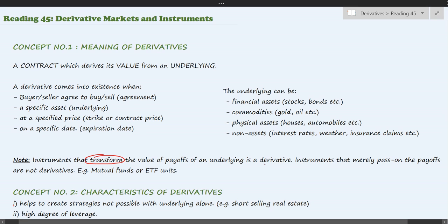We have a note here: instruments that transform the value of payoffs are derivatives — the keyword is 'transform.' Instruments that merely pass on the payoffs are not derivatives. For instance, mutual funds pass on the benefits of investments as-is to their unit holders; there is no transformation of value, and hence mutual fund units or ETF units are not derivatives.